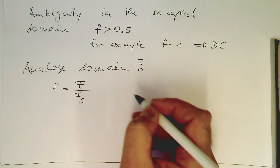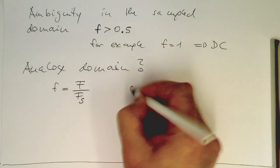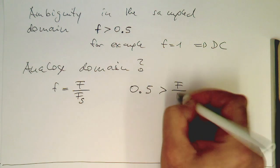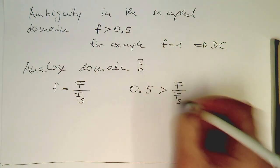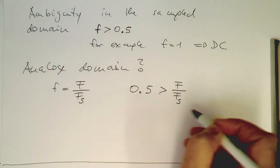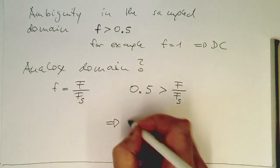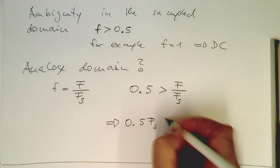And so therefore, if we now apply our rule that this ratio should be always lower than 0.5 and we multiply this here over, we are getting this here.